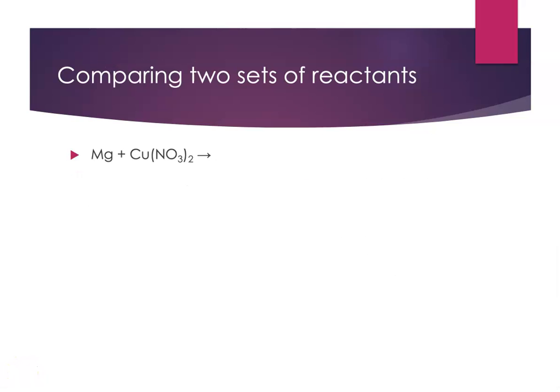If we compare two sets of reactants, let's say we have a magnesium strip and we insert it into a solution of copper 2 nitrate. Well that reaction occurs. We get magnesium nitrate in solution and we see copper metal depositing. However, if we have a strip of copper metal and we insert that into a solution of magnesium nitrate, nothing happens. There's no evidence of any chemical reaction occurring.